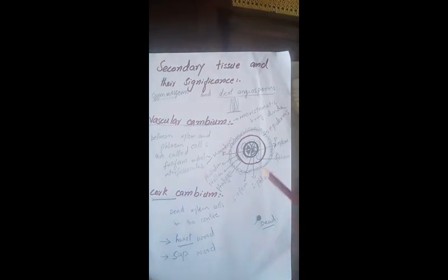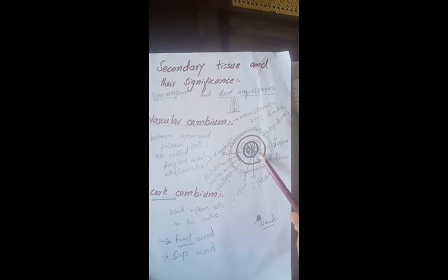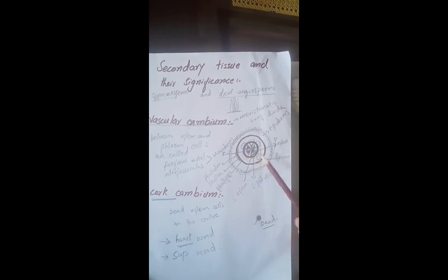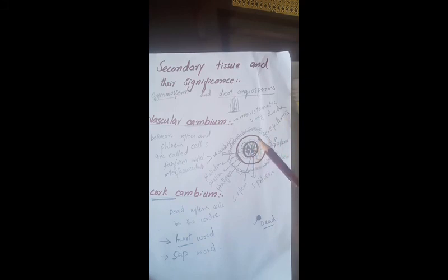As cells grow older and older, the need and requirement for food and water increases. This increased requirement can be fulfilled if the number of xylem and phloem increases, so secondary growth increases the number of xylem and phloem, which is necessary to fulfill the growth requirements of the plant. Secondary growth also helps to support the plant — as the plant gets older and taller, it is vital to give it structural support.